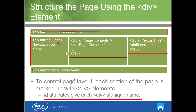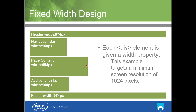How to make a div not start from a new line but follow the previous one is done using the float property. At the beginning, we specify widths — for example, the header and footer at 974 pixels, the navigation bar at 160 pixels, page contents at 654 pixels, and extra links at 160 pixels. This example targets a minimum screen resolution of 1024 pixels.